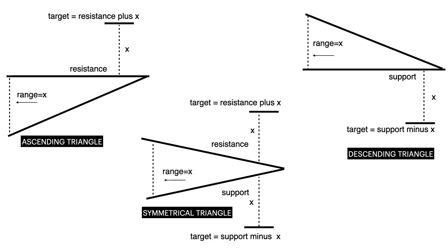Triangles could be reversal or continuation patterns. They require at least two highs and two lows to create the top and bottom boundaries of the triangle. Triangles may last from weeks to months. The price target for a breakout from a triangle is the vertical distance of the high and the low at the start of the pattern. Volume typically contracts near the end of the pattern. When price breaks above or below the pattern, the volume should expand.